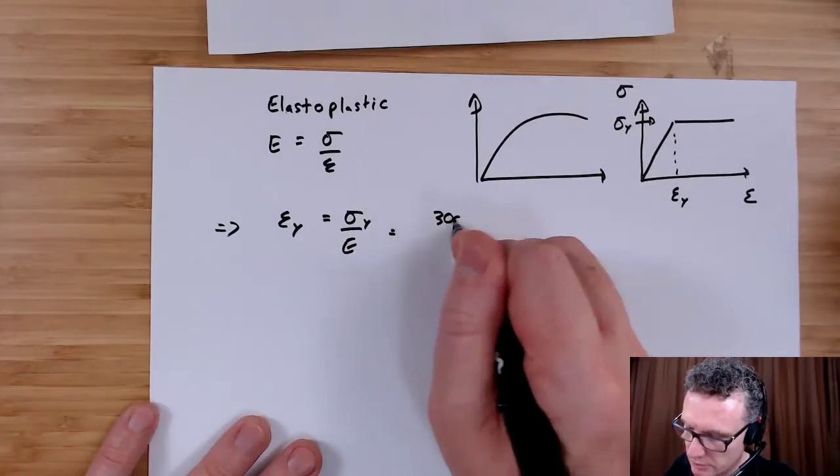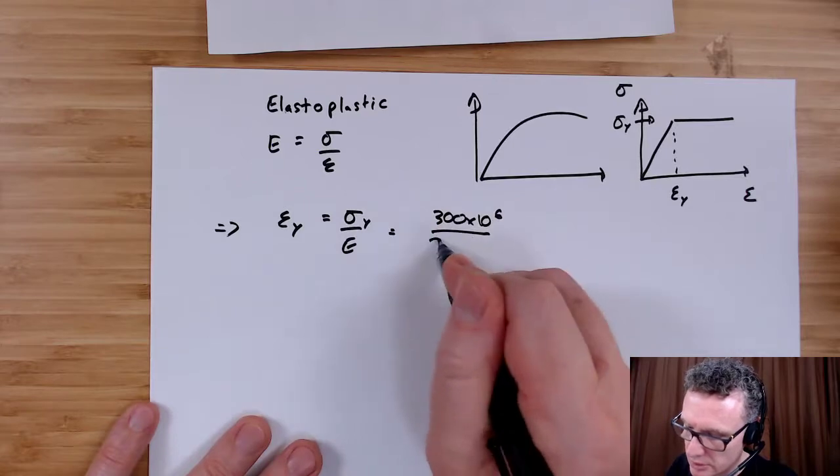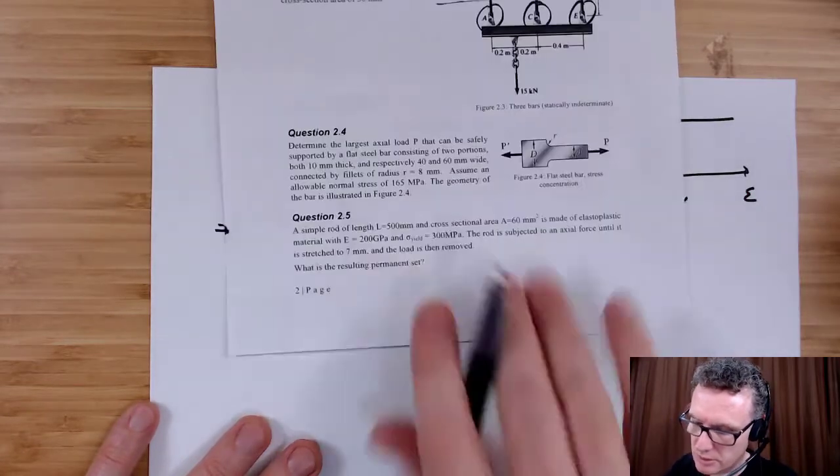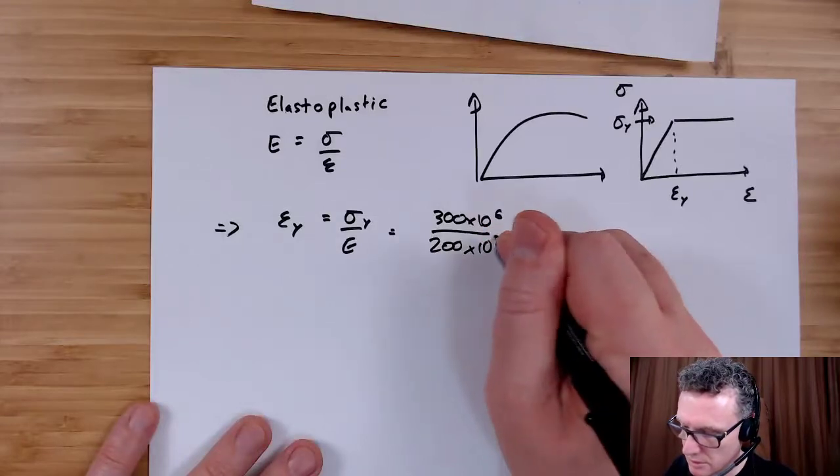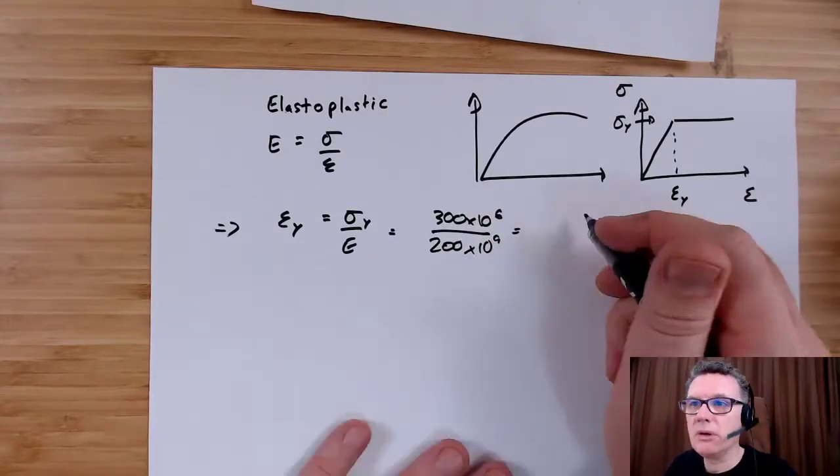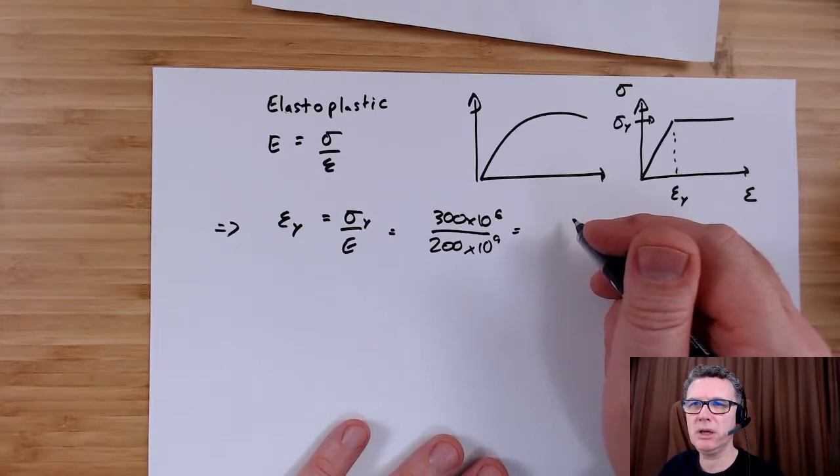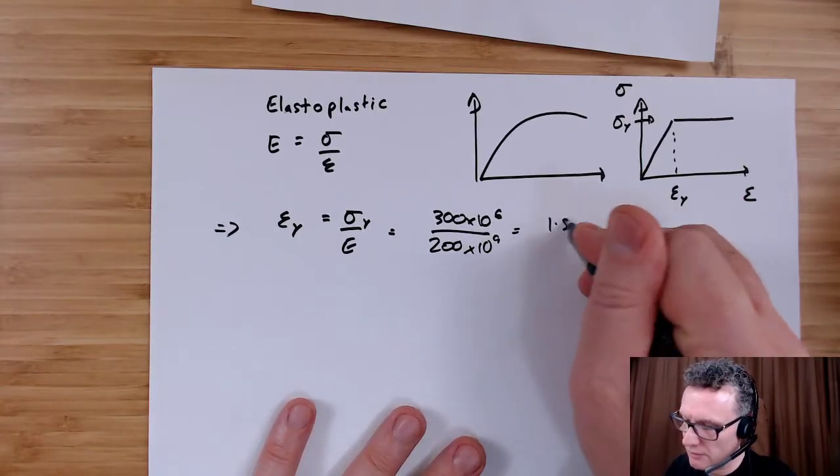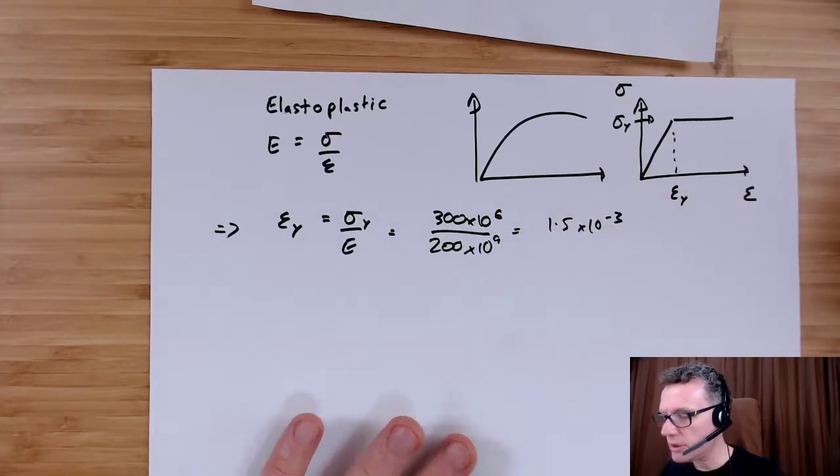We've been told what the yield stress is, yeah, so that's 300 megapascals—so 300 times 10 to the 6 divided by 200 gigapascals.